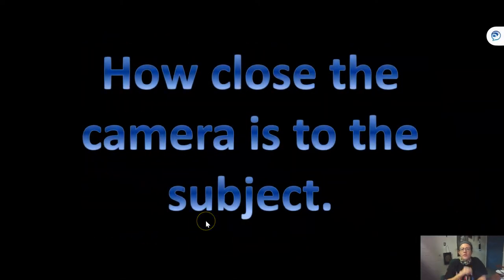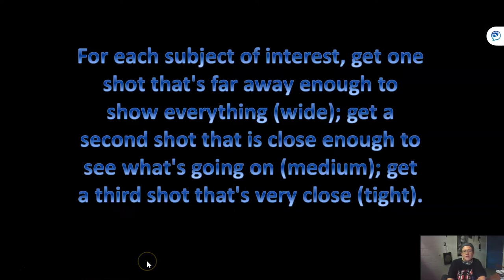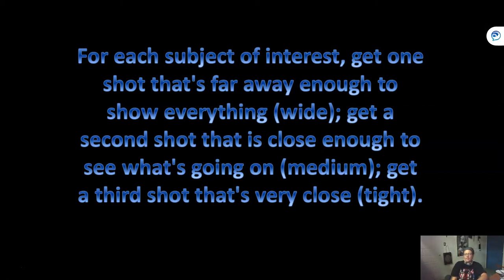We're back. So now we're going to talk about how close the camera is to the subject — also meaning our wide, medium, and tight shots. Let me reiterate what was said in the video. For each subject of interest — that could be an object or a person — you get one shot that's far away to show everything, showing the setting. That's your establishing shot or wide shot. You get a second shot that is close enough to see what's going on — that's your medium shot. And then a third shot that's very close, and that is your tight shot.